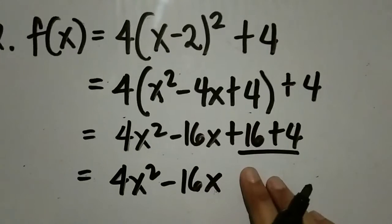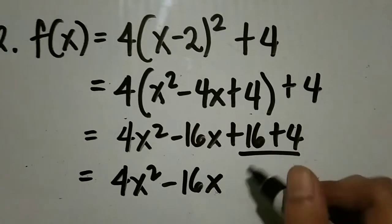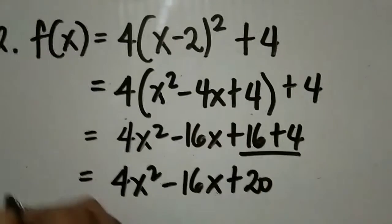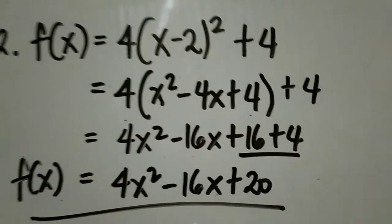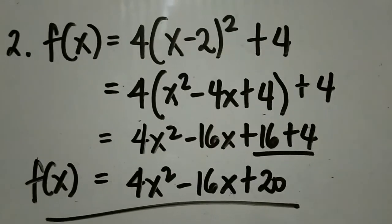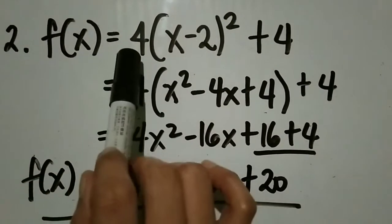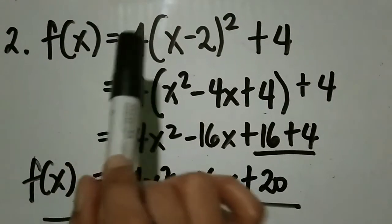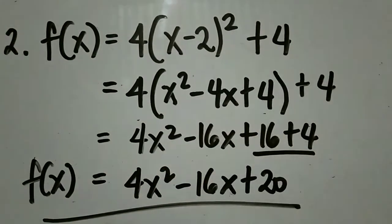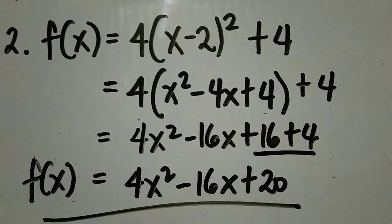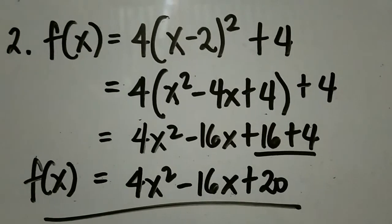Combine similar terms: we have 4x² minus 16x, then 16 + 4 is 20. So the quadratic function of the vertex form f(x) = 4(x - 2)² + 4 is f(x) = 4x² - 16x + 20.